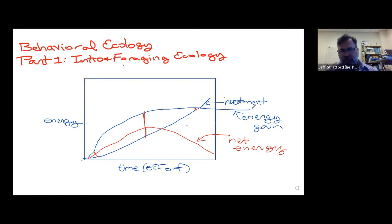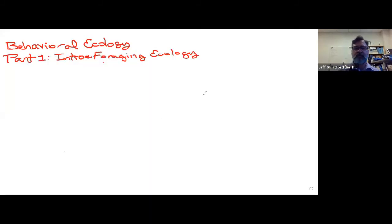So this is the marginal, what we call the marginal value theorem. The next thing I want to talk about is the marginal value theorem. Marginal value theorem. And this was developed by Eric Charnoff. Maybe it was the 1970s, 1976.